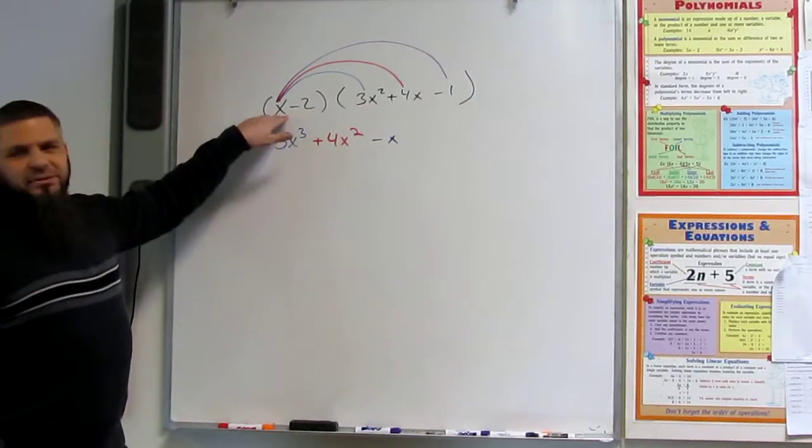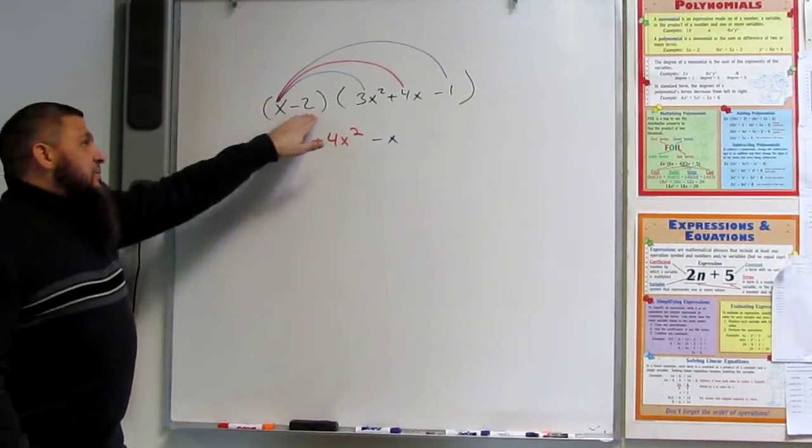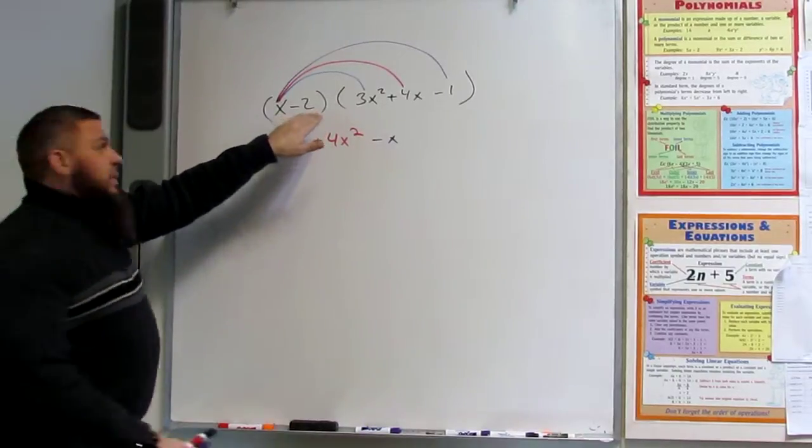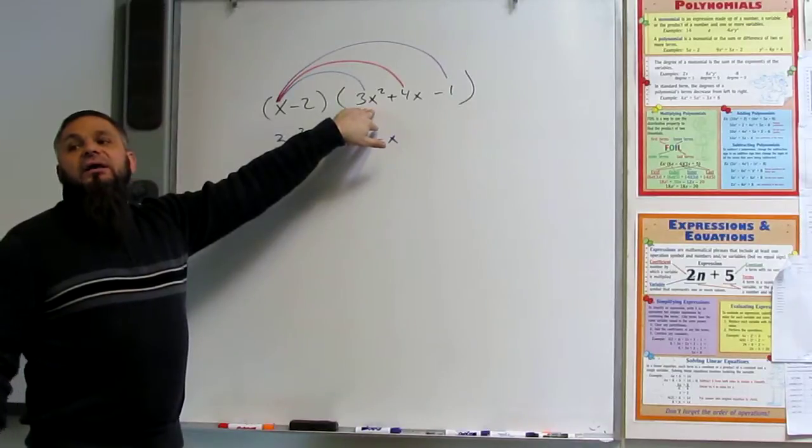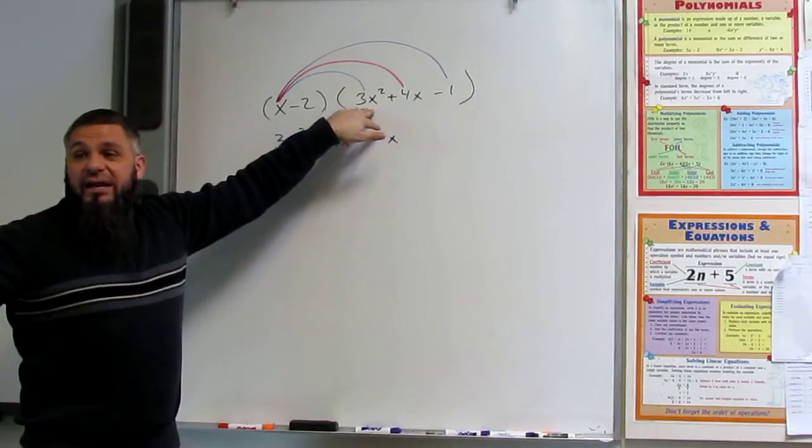Well, that's if I were starting here. But I'm not. I'm starting here. So when I take a negative 2 times this, what do I get? Negative 6x². 6x². So quadratic.